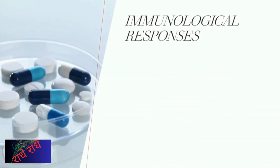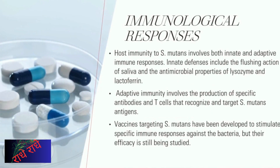The immune response to Streptococcus mutans is intricate and consists of different measures. The flushing action of saliva and the antimicrobial effects of lysozyme and lactoferrin are among the innate defense mechanisms. The adaptive immune response involves production of specific antibodies and T-cells, which can identify and target antigens specific to S. mutans. Vaccines to induce immune responses have been developed, but further research is necessary to evaluate their potency.